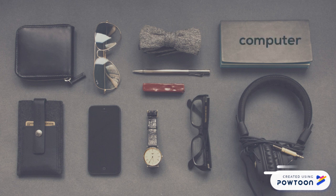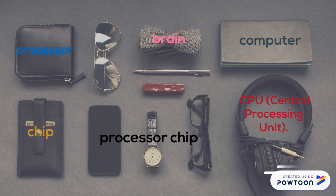Some other names include: central processing unit, or CPU; processor chip; and finally, the brain. This chip is responsible for every action that takes place on your device. They put this chip, or the computer, inside many other devices to allow them to perform and function well.